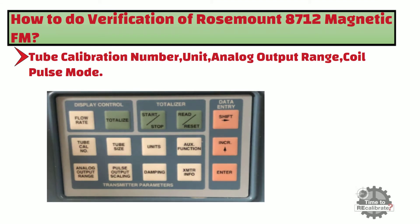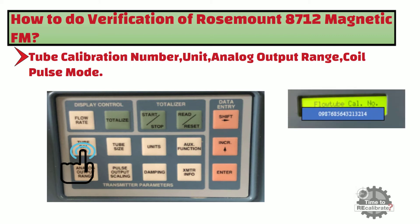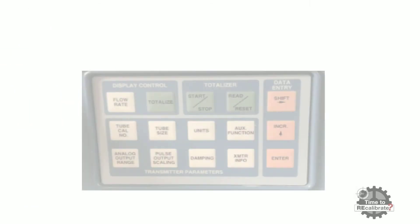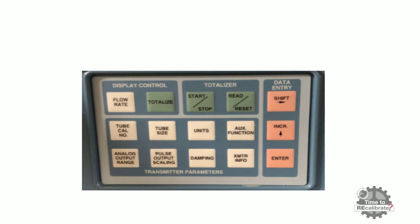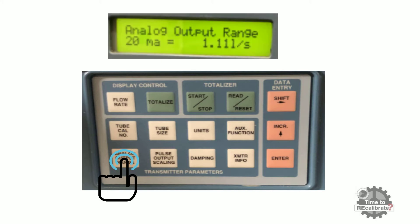In order to check the flow tube calibration number, press the tube cal number button on the local operator interface. As you can see from the picture, the 16-digit flow tube calibration number will display. Note down this value carefully. Then press the analog output range button to check the 4-20mA analog output range. As you can see from the picture, the 20mA range will display. Note down this value.